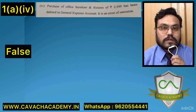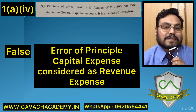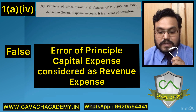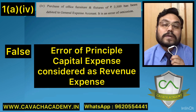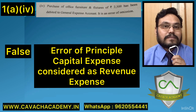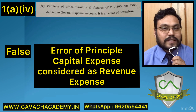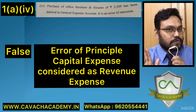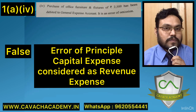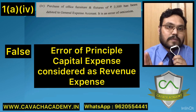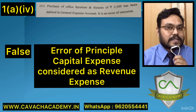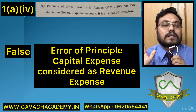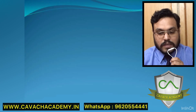Fourth question: office furniture of 2,500 rupees debited to general expense account — it is stated to be an error of omission. The answer is FALSE, because this is an error of principle. Furniture and fixtures is a balance sheet item, whereas general expenses is a P&L item, meaning a capital item has been treated as a revenue item. These kinds of errors are called errors of principle, not errors of omission.